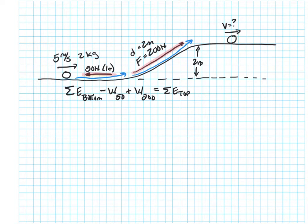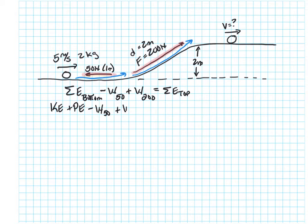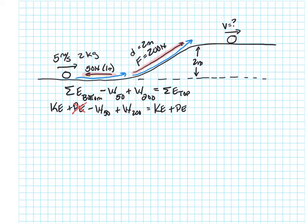When I break it down — by break it down, I mean insert my basic energies — I'm going to say kinetic energy at the start (which is at the bottom), plus potential energy due to gravity at the bottom, minus the work of the 50 Newton force, plus the work of the 200 Newton force, equals the kinetic energy at the top plus the potential energy at the top. I'll go through my usual questions: at the bottom, is it moving? Yes — keep that energy. At the bottom, is it above the other location's height? No, it's height zero — that goes away.